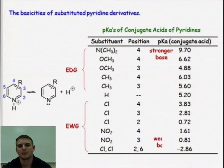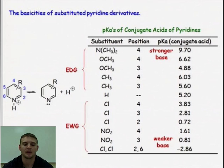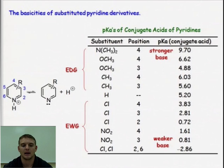If we look at this table of substituted pyridine derivatives, we can see the large effect that substituents have on the lone pair of the nitrogen in pyridine. The lone pair in nitrogen for this two-connected nitrogen is in an SP2 hybrid orbital and is not tied up in the pi system. It's perpendicular and sticking out of the side of the ring and not in conjugation with the pi system. Therefore, it's free to be a base or a nucleophile, whatever the conditions may be.